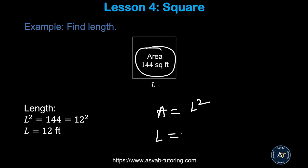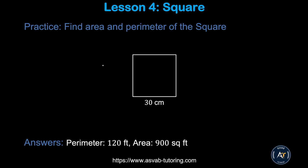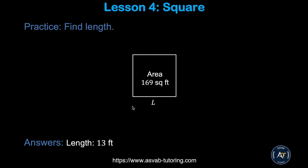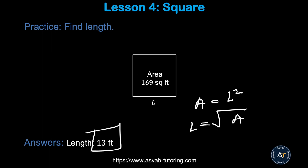Using the formula l = √a, you can find the side length. Pause the video and try the practice problems. Make sure you get perimeter = 120 feet and area = 900 square feet for the first one. For the next, area is given — use l = √a to find the length. The answer is 13 feet.